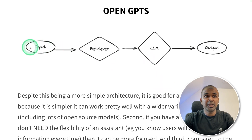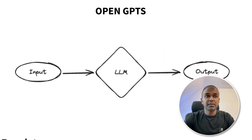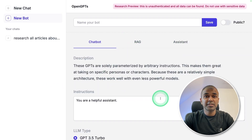In regards to RAG, the input goes to the retriever where the embeddings are stored, and then the data is passed to the large language model as context. Finally we get the output. Thirdly, we can use it as a chatbot where you provide the input and the large language model gives us the output. This is how the interface looks with three different options.